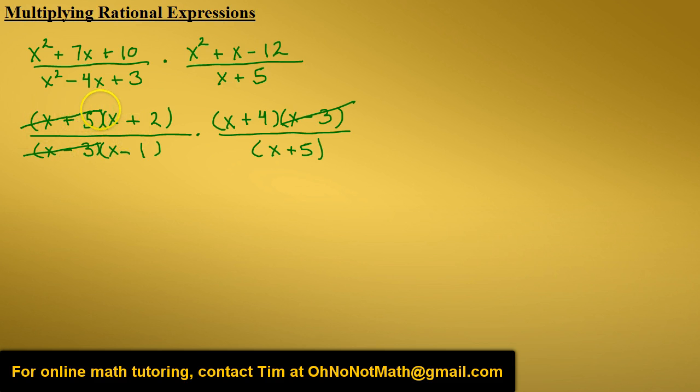And we're left with x plus 2 times x plus 4 over x minus 1, and that is our final answer.